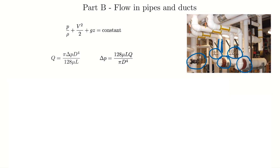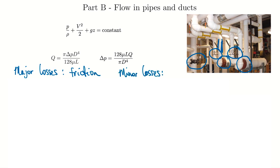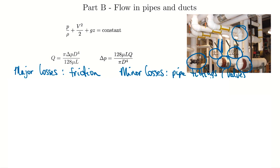As we look at friction, we break it into two broader categories. Major losses are the friction-related losses — the friction caused by the fluid flowing through the pipe and rubbing against the pipe wall. Minor losses are from pipe fittings — things like valves, elbows, and so forth. All these fittings and bends in the flow cause losses as well.